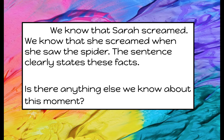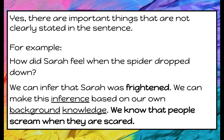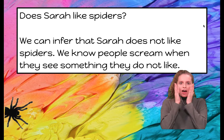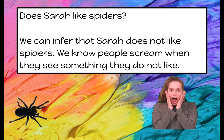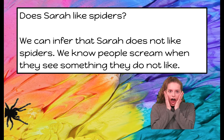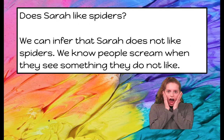Is there anything else we know about this moment? Yes, there are important things that are not clearly stated in the sentence. For example, how did Sarah feel when the spider dropped down? We can infer that Sarah was frightened. We can make this inference based on our own background knowledge — we know that people scream when they are scared. Does Sarah like spiders? We can infer that Sarah does not like spiders, because we know people scream when they see something they do not like.